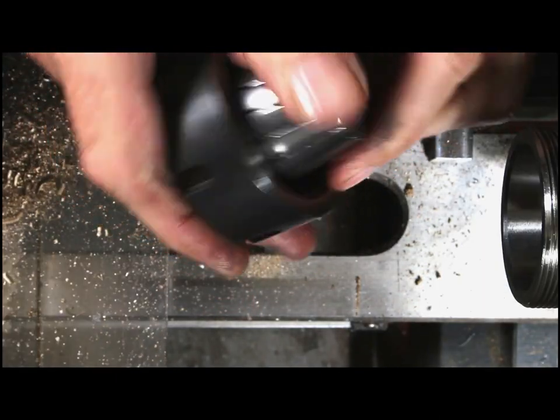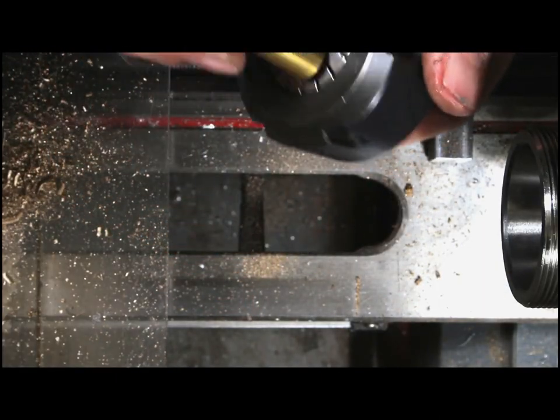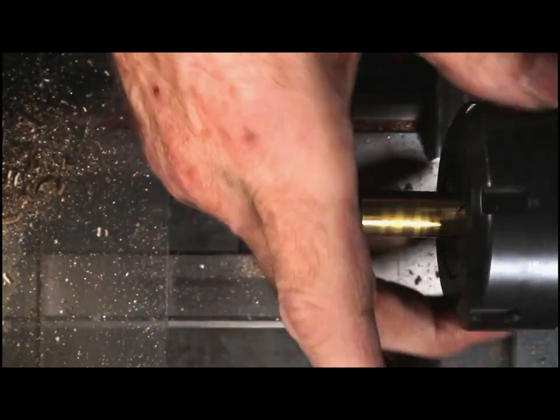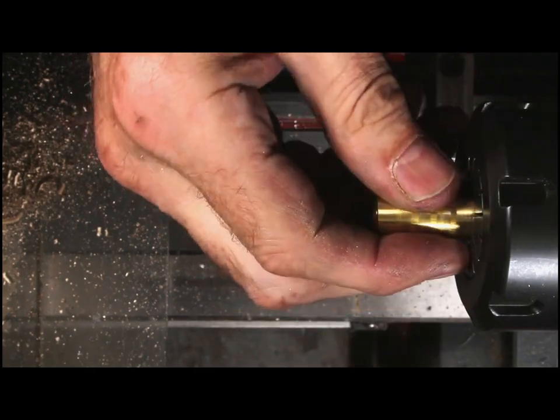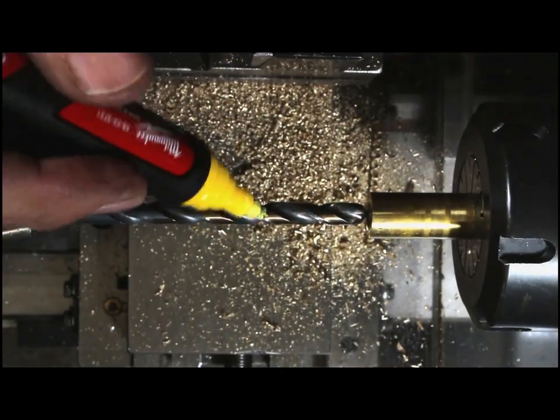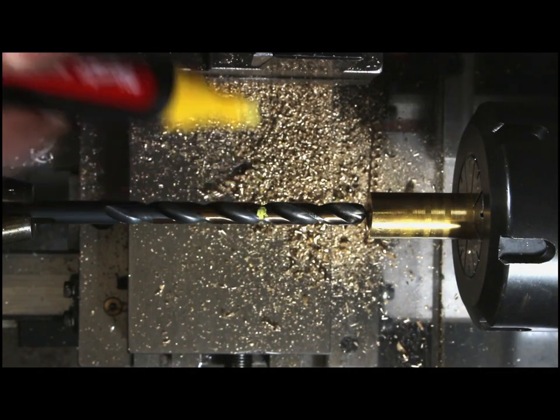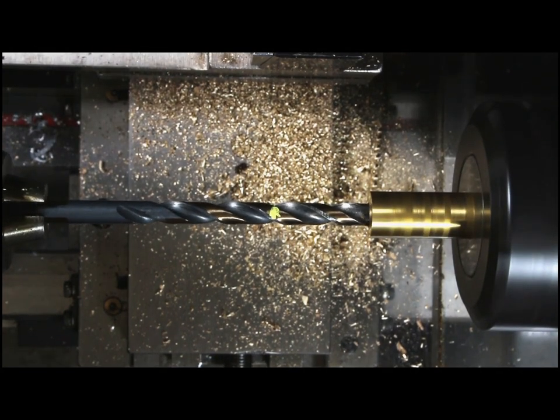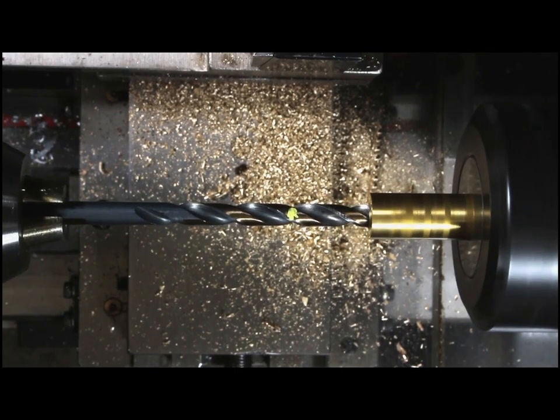So switching out my collet chuck, I'm going to get some half-inch brass in here for the nut that will tighten down onto the collet end there. One of my tricks for drilling hole depths is to mark it with one of these markers here.